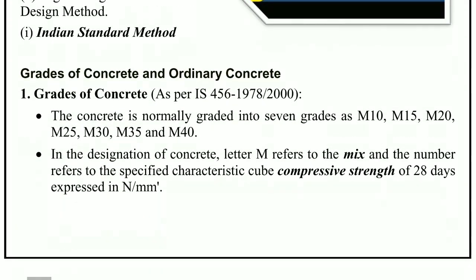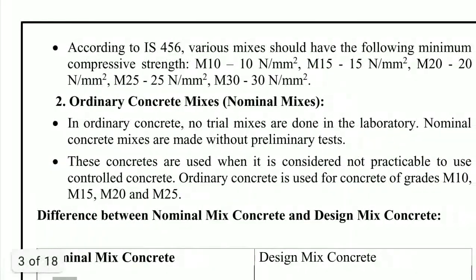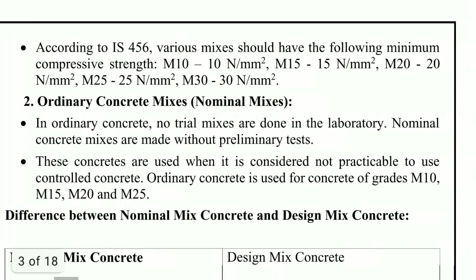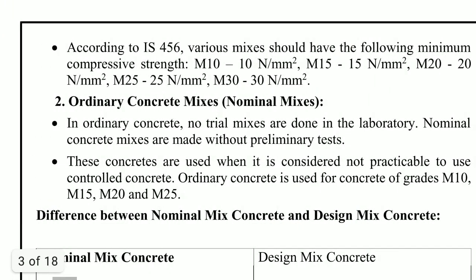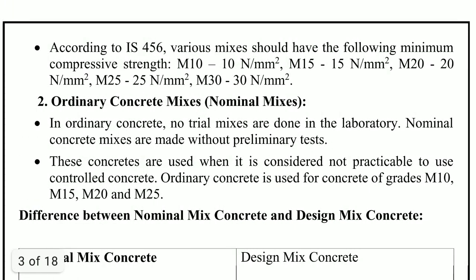Now we have learned about different grades of concrete. We know what M10, M15, and M20 are. M10 means M stands for mix and 10 is the compressive strength after 28 days in Newton per mm². This is according to IS 456. Now, ordinary concrete mixes — that is, nominal mixes — are used for grades M10, M15, M20, and M25.